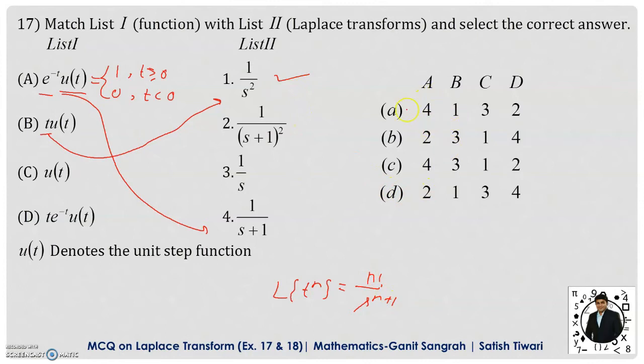Now if you observe in the options, option A is correct here because A is mapping to 4, B is mapping to 1. Now I will check if C is mapping to 3 or not. So for u of t, the Laplace transformation will be given by 1 by s.